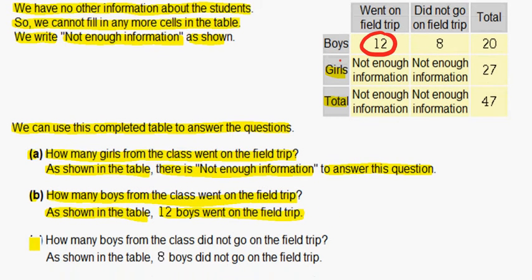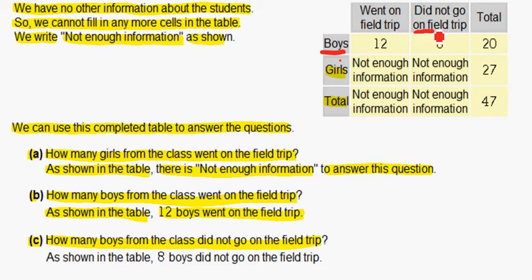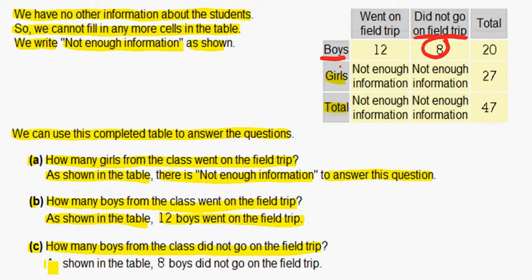In C, how many boys from the class did not go on the field trip? We look at boys and did not go on the field trip, which is 8. So as shown in the table, 8 boys did not go on the field trip.